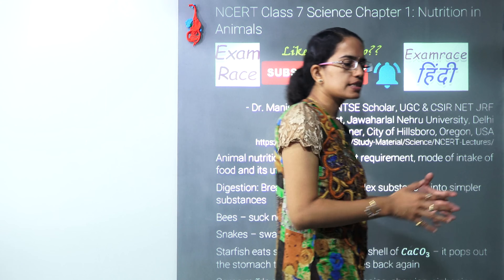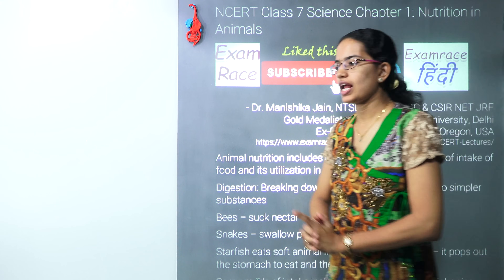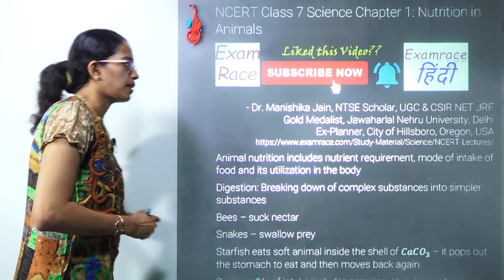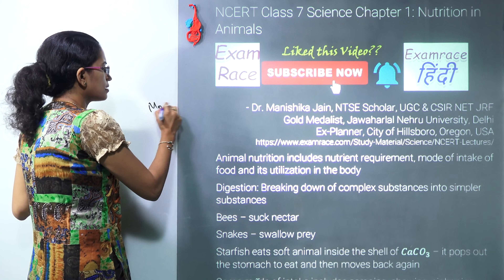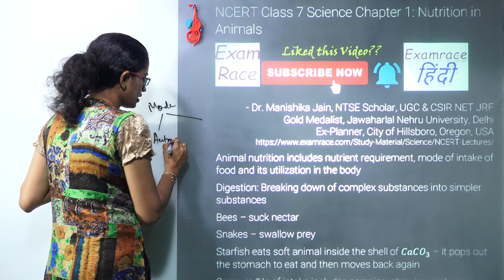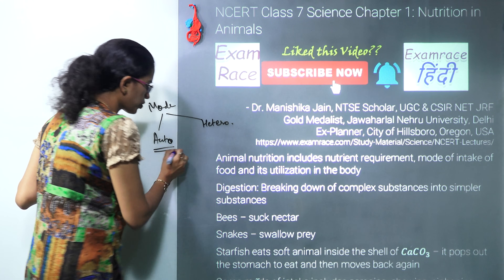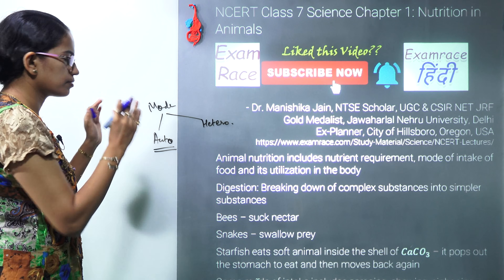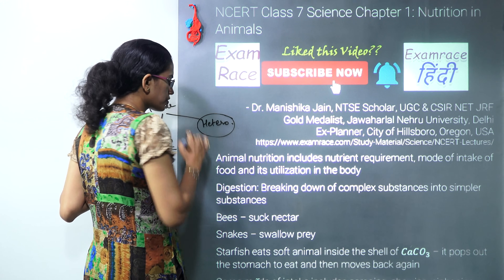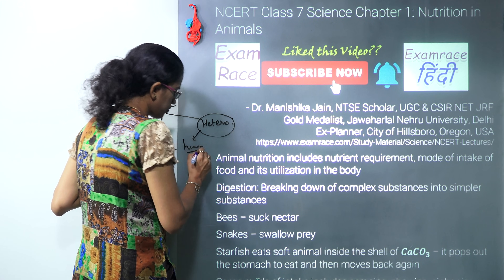Welcome back. Today's class we would understand nutrition in animals. In the first class we talked about mode of nutrition. Under mode of nutrition we said there are two modes: autotrophy and heterotrophy. In the last class we discussed autotrophy which occurs in plants and we talked about the process of photosynthesis. Today we would focus on heterotrophy, mainly with respect to human beings.